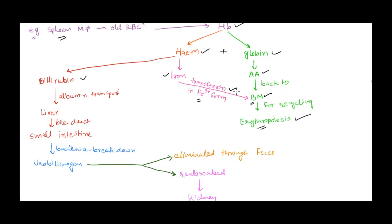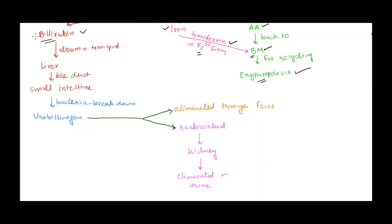What happens to bilirubin? This bilirubin is taken to liver. Bilirubin also cannot be simply transported - it needs albumin as the transport system. It's transported to liver and from liver goes to small intestine via bile duct. In the small intestine, the bacterial flora acts upon this bilirubin to break it down into urobilinogen.